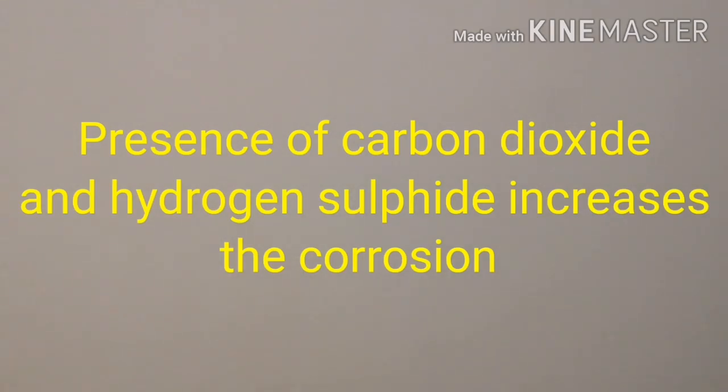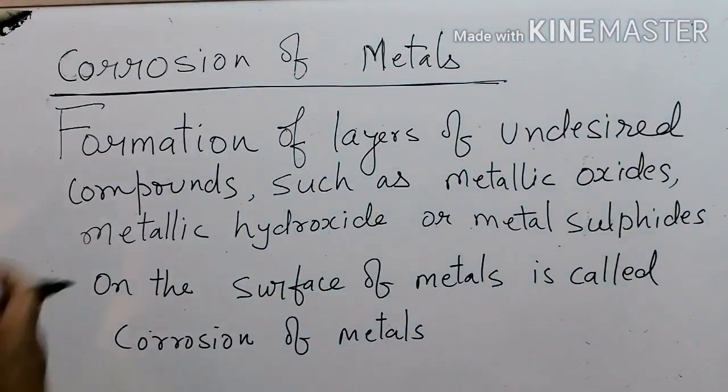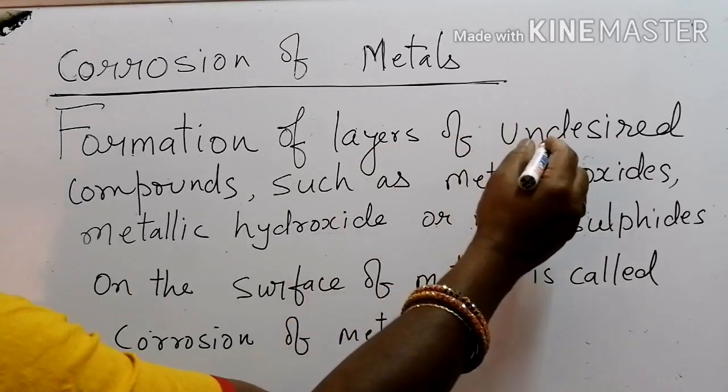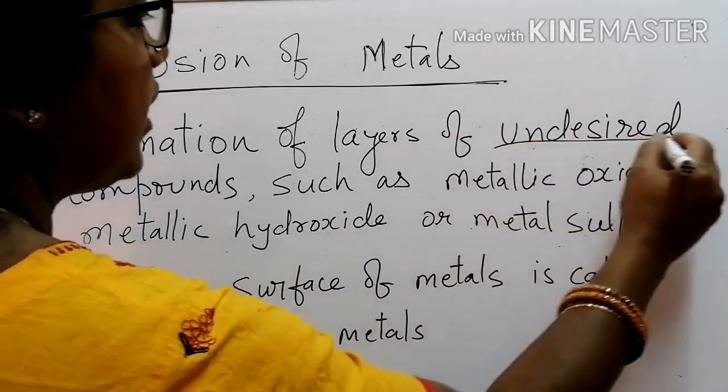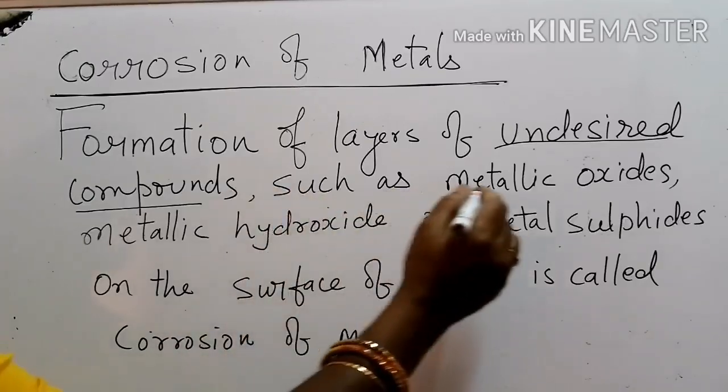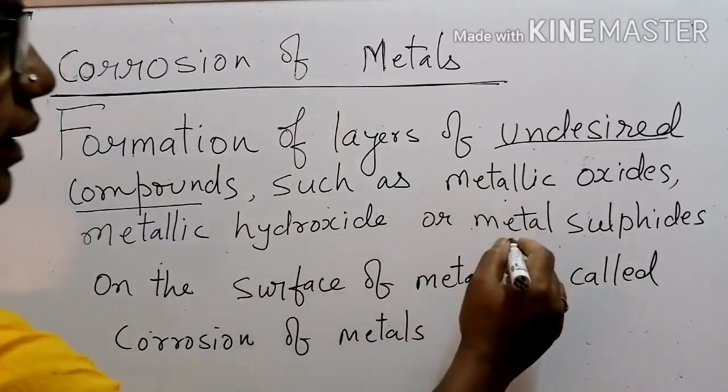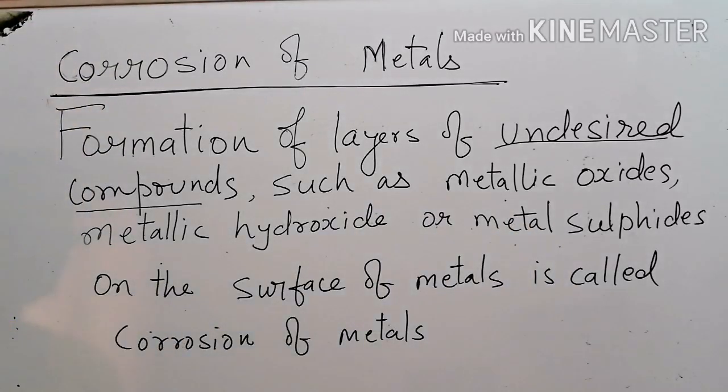So, let me define what is corrosion. Corrosion of metals is the formation of layers of undesired compounds such as metallic oxide, metallic hydroxide or metal sulfides on the surface of metals. The process is called corrosion of metals. In standard 10, we have to learn the corrosion of following metals: